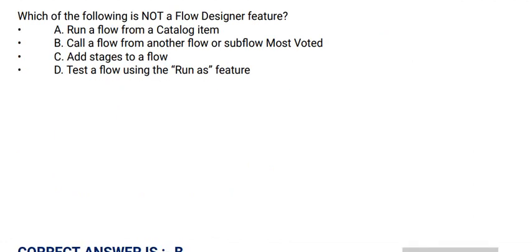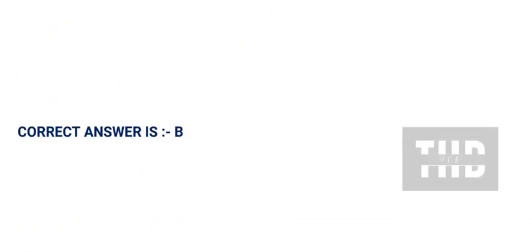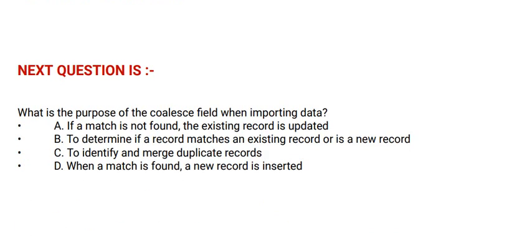The correct answer is Option B. Next question: What is the purpose of the Coalesce field when importing data? Option A: If a map is not found, the existing record is updated. Option B: To determine if a record matches an existing record or is a new record. Option C: To identify and merge duplicate records. Option D: When a map is found, a new record is inserted. The correct answer is Option B.